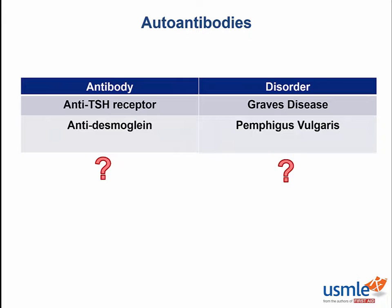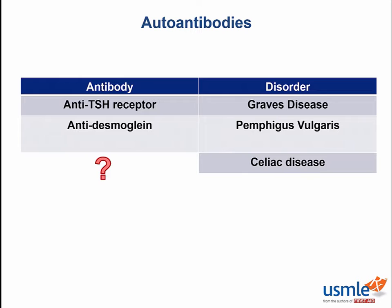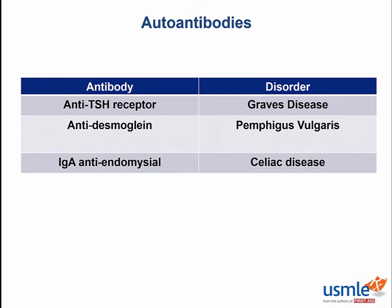Our third patient comes to the GI doctor with a 3-month history of recurrent diarrhea and cramping. She first tried cutting out dairy with no relief, then cut out meat, but still had diarrhea. A biopsy of her intestines shows blunting of the intestinal villi. The diagnosis is celiac disease. The autoantibodies associated here are anti-endomyseal antibody and anti-tissue transglutaminase.